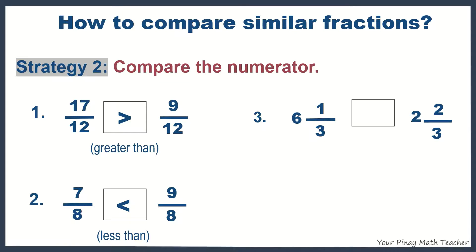Six is greater than two, though one-third is less than two-thirds. And since six is greater than two, then six-and-one-third is greater than two-and-two-thirds.